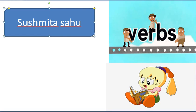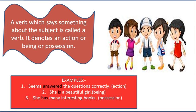Today in English I am going to take verbs. Verbs are the doing word — when we do something, those words are called verbs. If you like my video, please subscribe to my channel and don't forget to press the bell icon. So let's start with the definition of verb. A word which says something about the subject is called a verb. It denotes an action, being, position, or possession.